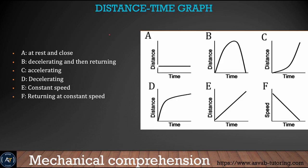In this figure, we'll look at a distance-time graph. There are a few graphs here — make sure that you remember those graphs and learn how to read them, because those are the types of questions you might see in the actual test. Graph A shows an object at rest, so the distance is always the same. Figure B is decelerating and then returning. Figure C is actually accelerating. Figure D is decelerating. Figure E is called constant speed, and figure F shows returning at constant speed.